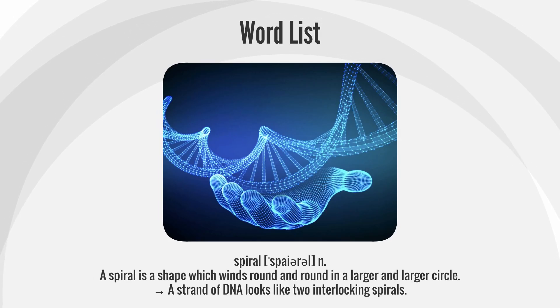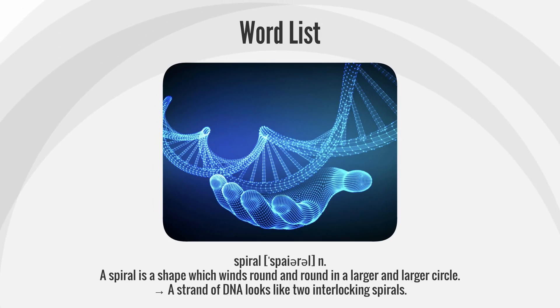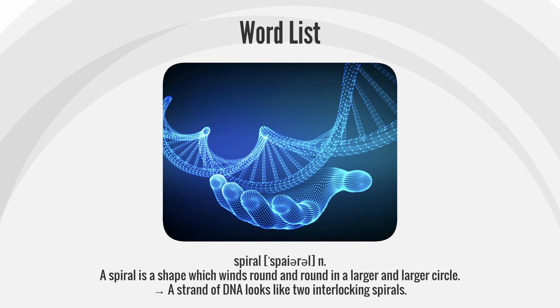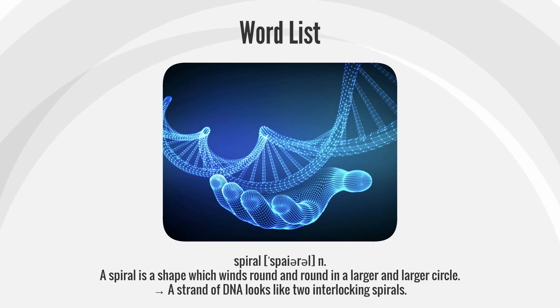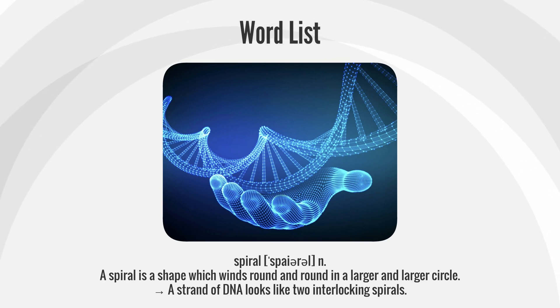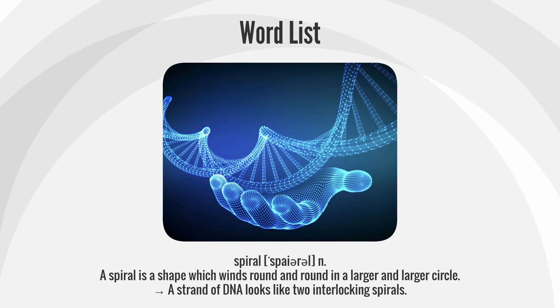Spiral. A spiral is a shape which winds round and round in a larger and larger circle. A strand of DNA looks like two interlocking spirals.